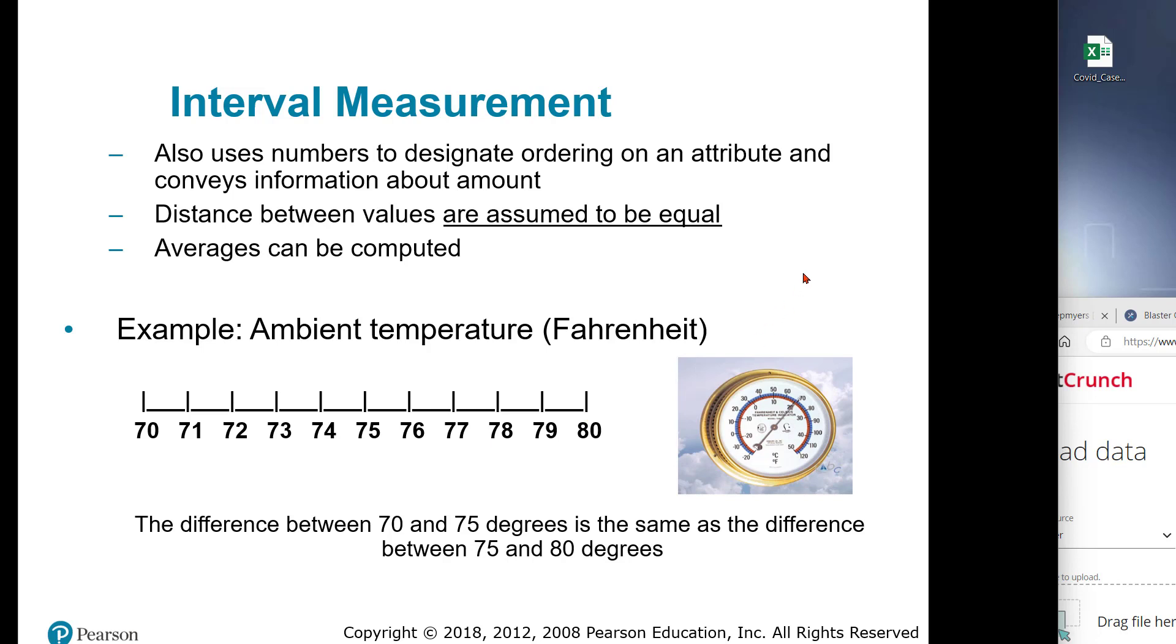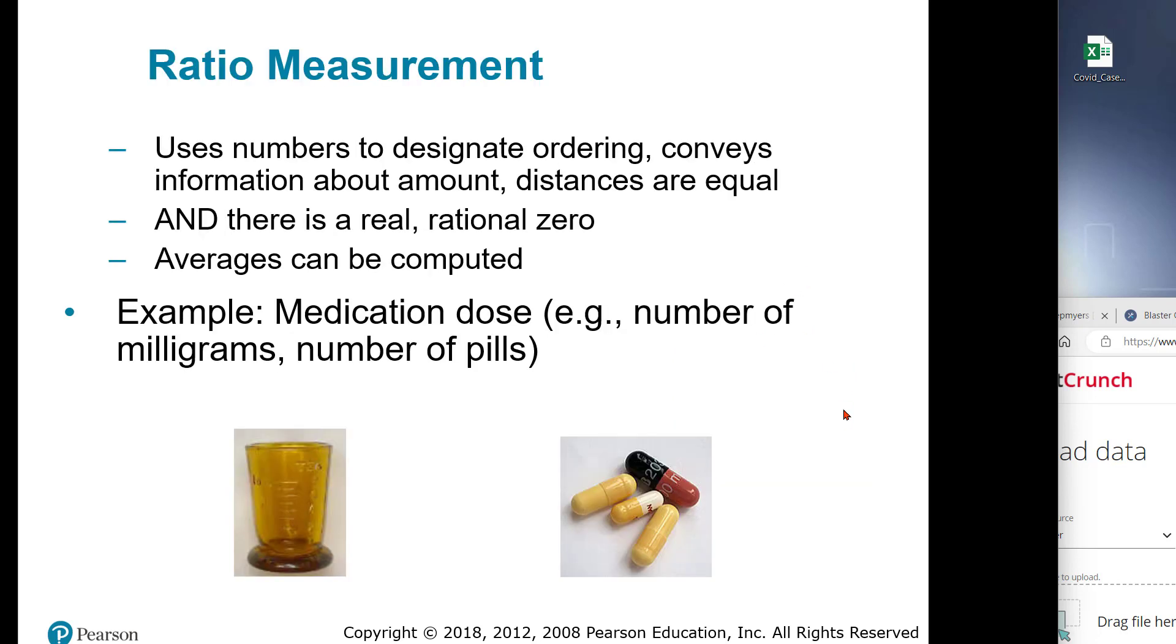The other one we use a lot in analysis is a ratio measurement. The ratio measurement has a true zero. An example would be temperature in degrees Kelvin because in degrees Kelvin there is an absolute temperature zero, where there is no heat, no movement at all, and then the rest of the values have the same distances between the degrees. Ratio measurements have a meaningful and a real, rational zero.